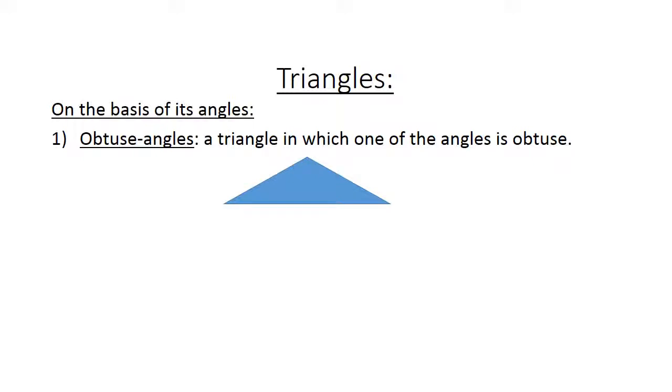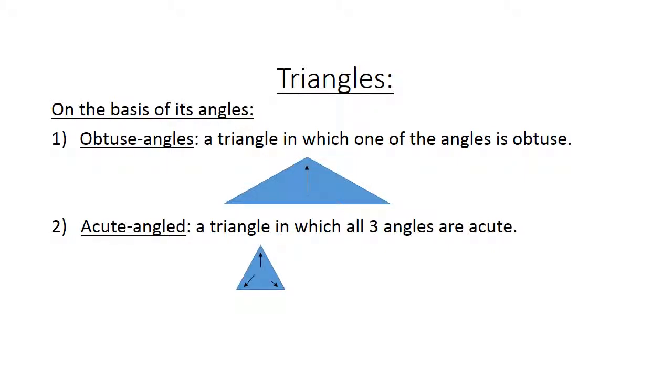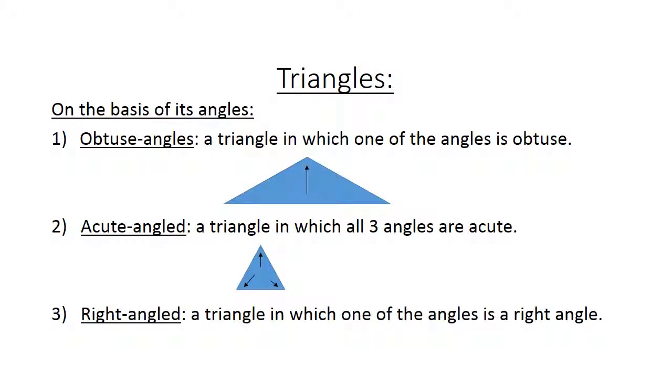Triangles on the basis of its angles. 1. Obtuse angle, a triangle in which 1 of the angles is obtuse. 2. Acute angle, a triangle in which all 3 angles are acute. 3. A right angle triangle, a triangle in which 1 of the angles is a right angle.